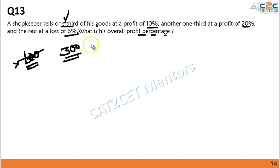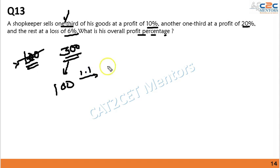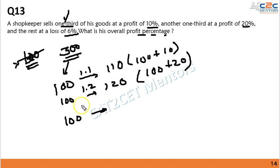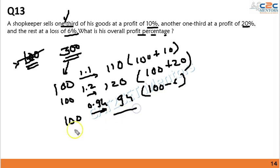With a total value of 300, one-third is 100. At 10% profit, using multiplication factor 1.1: selling price = 110. Another one-third at 20% profit, factor 1.2: selling price = 120. The remaining one-third at 6% loss, factor 0.94: selling price = 94.